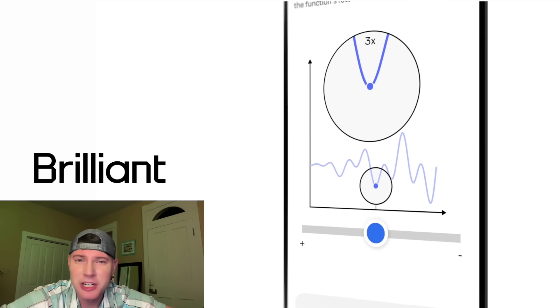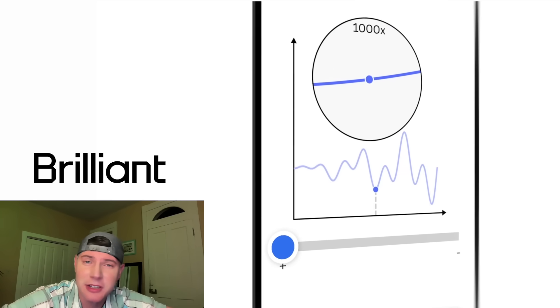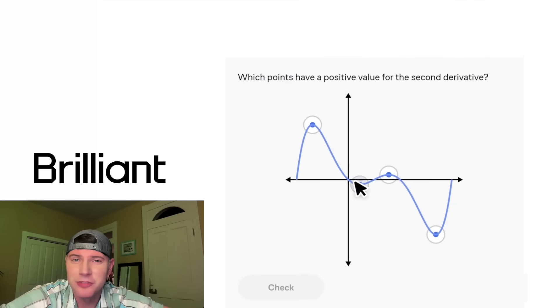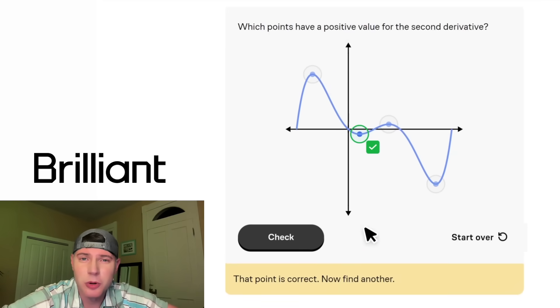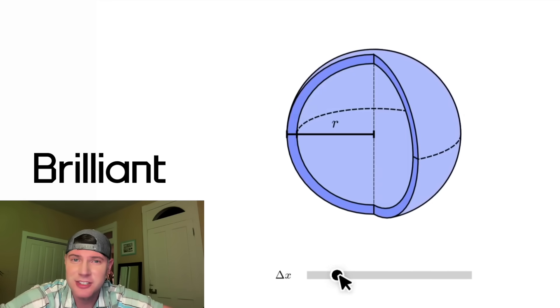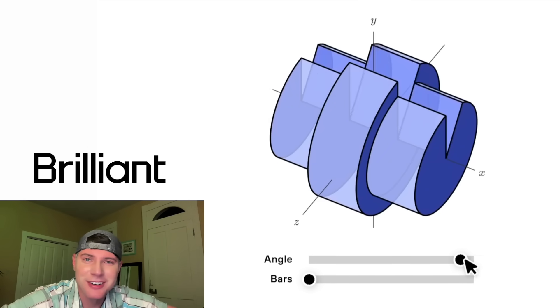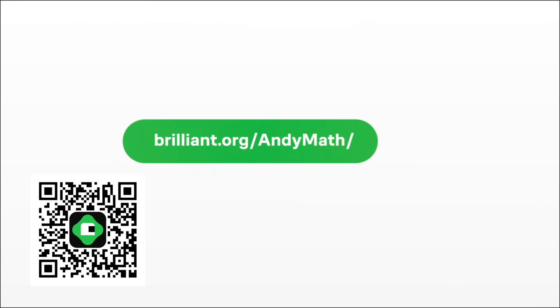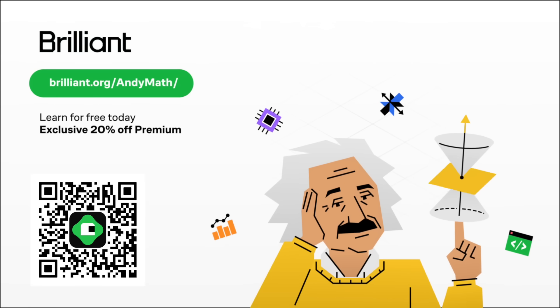There are courses on geometry, algebra, linear algebra, calculus, probability, all the fun math classes. They also have a ton of courses in the sciences, in programming, in artificial intelligence, data analysis, and many more. To try Brilliant for free, visit brilliant.org slash andymath or scan the QR code on the screen. Or you can click on the link in the description. You also get 20% off an annual premium subscription. How exciting.